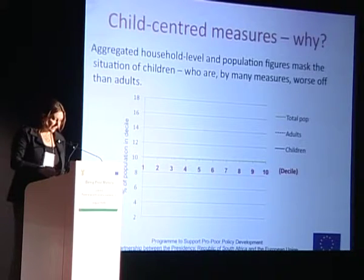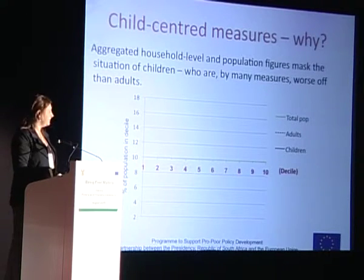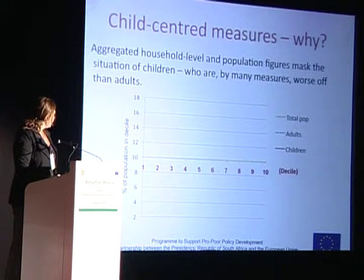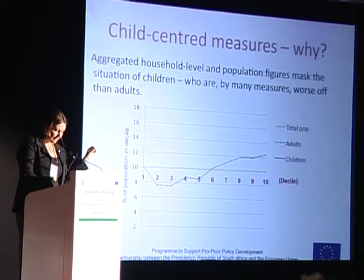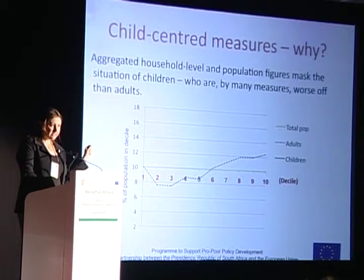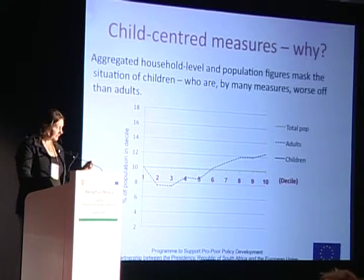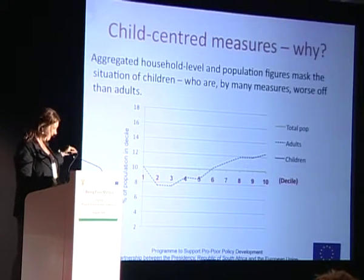If we look across income quintiles or deciles, we get a similar picture. If we take the population and divide it into income deciles, we get a flat line. But if we look at adults, you can see that adults are overrepresented in the upper deciles, while children are heavily concentrated in the lower deciles.